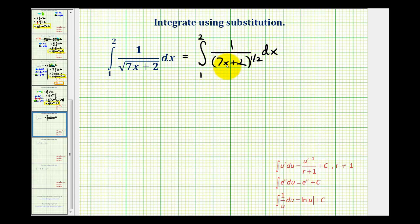So here we have a composite function, so we'll let u equal the inner function of seven x plus two. So differential u will be seven dx. But notice how we don't have a seven dx as part of our integral, we just have one dx. So let's go ahead and divide both sides by seven here. So we have one-seventh du is equal to dx.